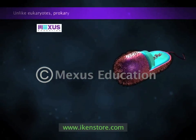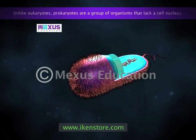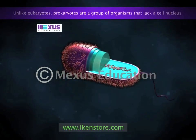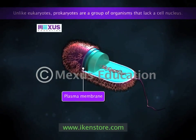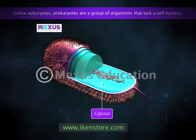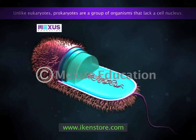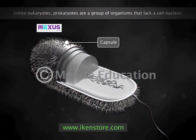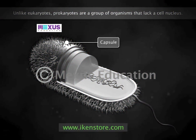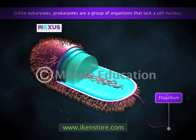Prokaryotes are a group of organisms that lack a cell nucleus. Prokaryotic cells have a plasma membrane and are surrounded by a semi-fluid substance called cytosol where the organelles are suspended. On the outermost layer of prokaryotes there is a waxy coating called the capsule, which protects the cell and helps it stick to other surfaces. A flagellum is a tail-like projection that protrudes from the cell body of certain prokaryotic cells.